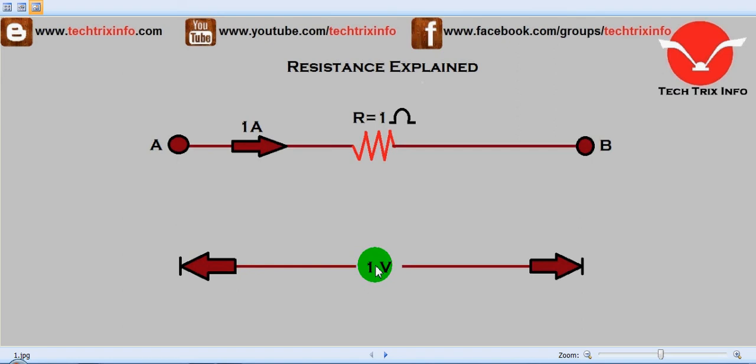...causes one ampere to flow through it. So this is how resistance can be explained - it is simply the opposition offered to the flow of electrons. I believe you got an idea about resistance.